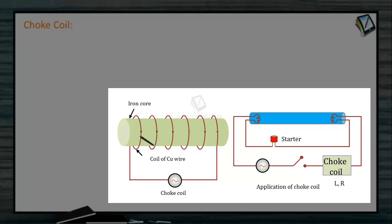The inductive reactance, or the effective opposition of the choke coil, is XL = ωL. For an ideal choke coil, R = 0, so no energy is wasted and average power is equal to 0. In actual practice, a choke coil is equivalent to an L-R circuit.